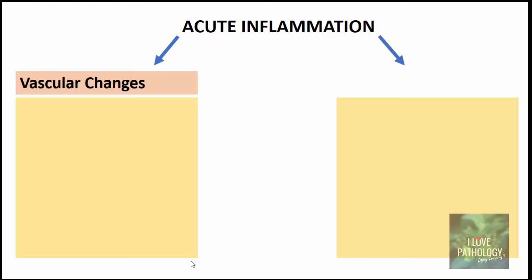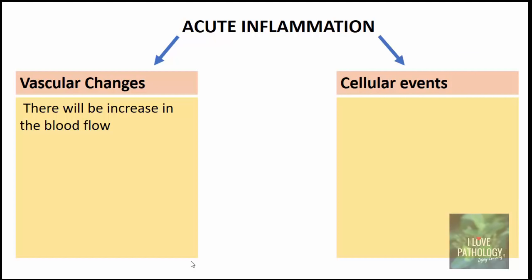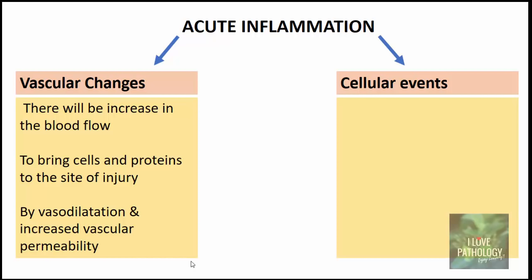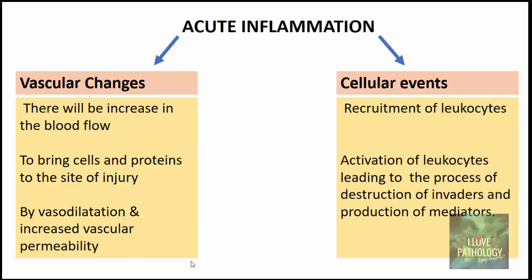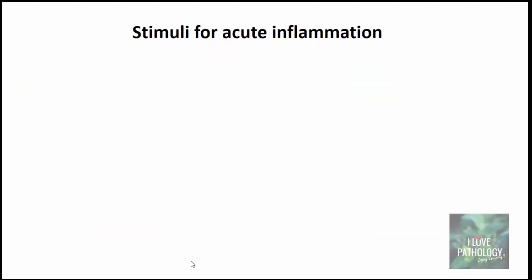Acute inflammation is best understood by examining two important events: vascular changes and cellular events. Vascular changes involve an increase in blood flow — brought about by vasodilation and increased vascular permeability — to deliver cells and proteins to the site of injury. The cellular event involves recruitment and activation of leukocytes, leading to destruction of invaders via phagocytosis and production of chemical mediators.